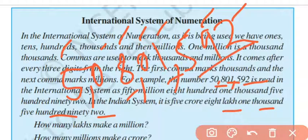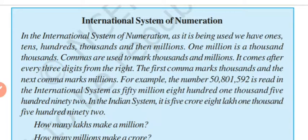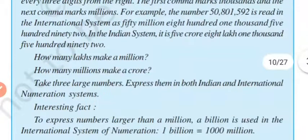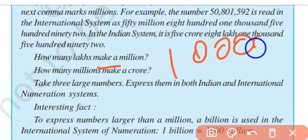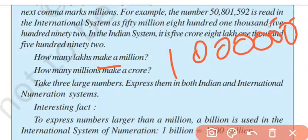Okay, so this is our Indian system. In the Indian system, we write: first three digits, then a comma; then two digits, then a comma — and we get: one, ten, hundred, thousand, ten thousand, lakh, ten lakh, crore. Five crore, eight lakh, one thousand, five hundred and ninety-two. How many lakhs make a million? 10 lakhs is 1 million.